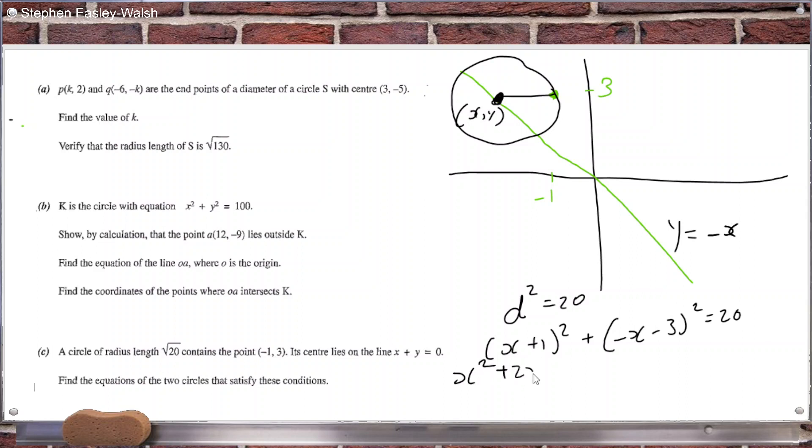So let's see. That's x squared plus two x plus one plus x squared plus six x plus nine equals 20. So that's two x squared plus eight x. Nine and one is 10. Minus 10 equals zero. So I'll just put it up here since I'm out of space.